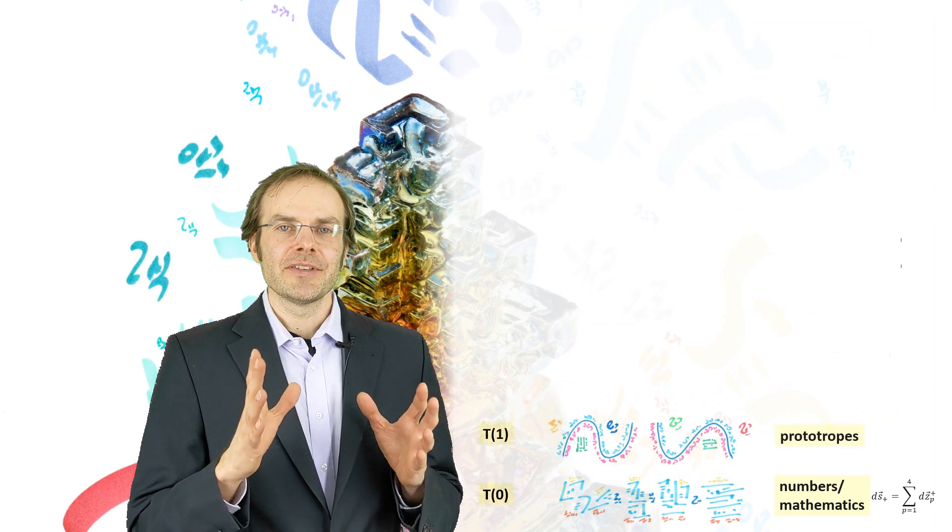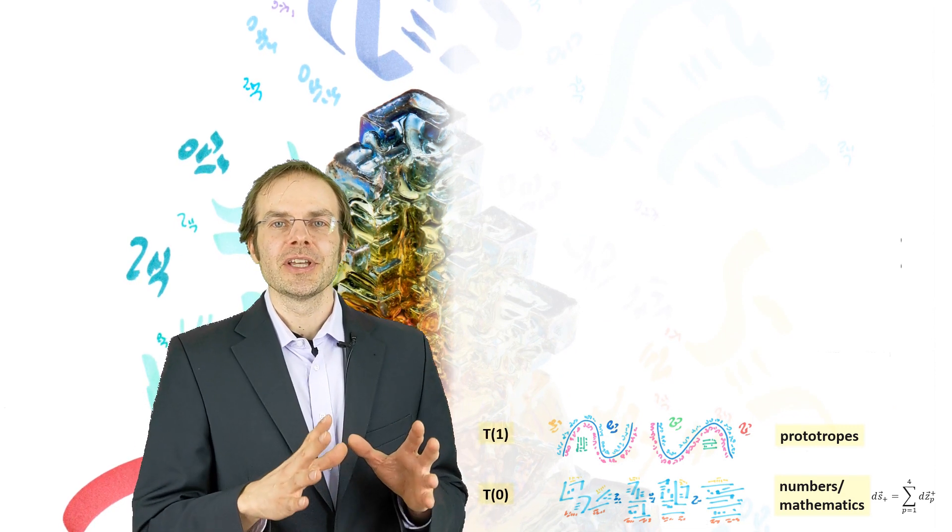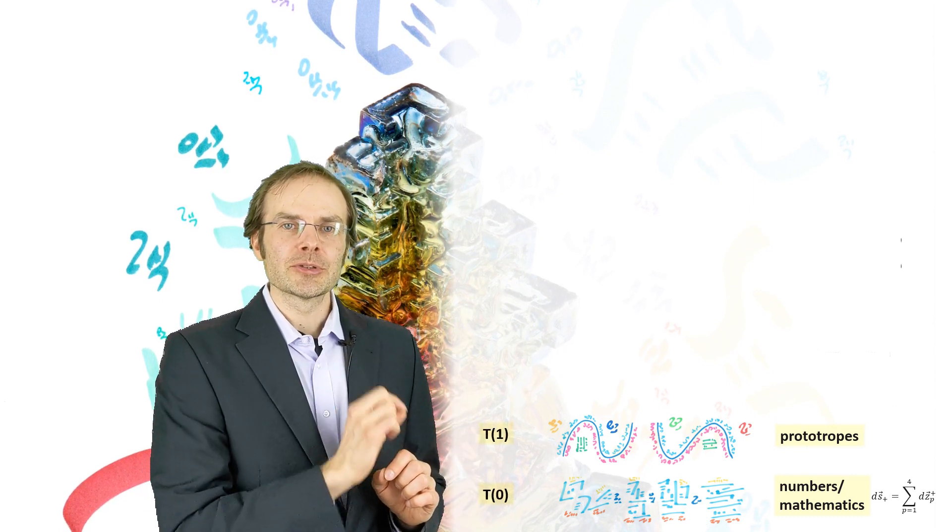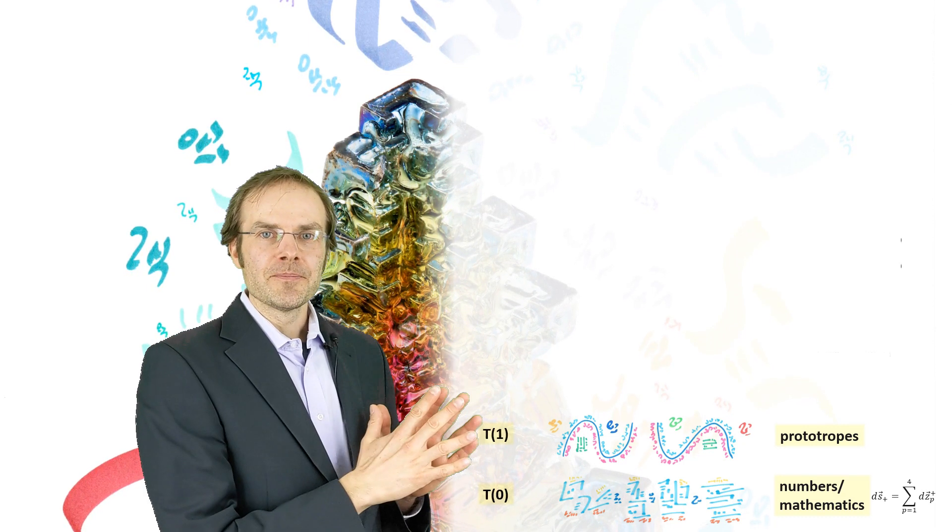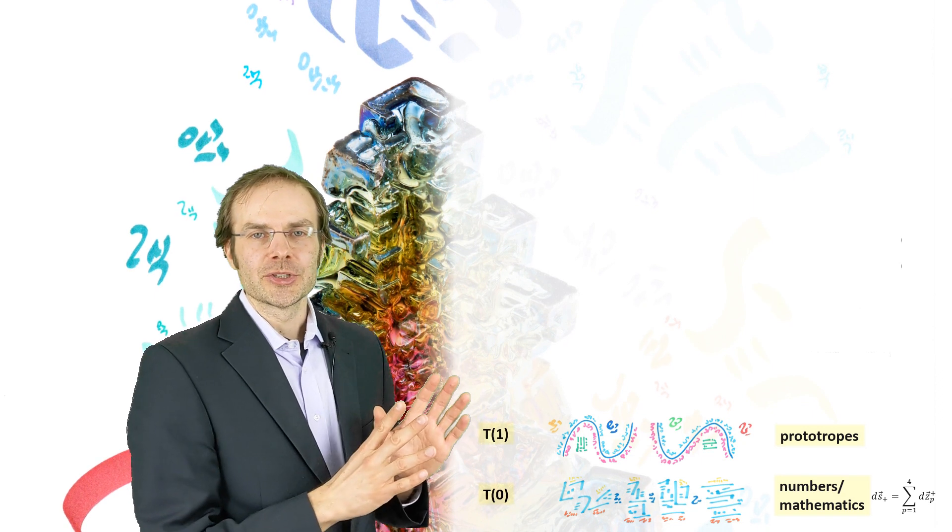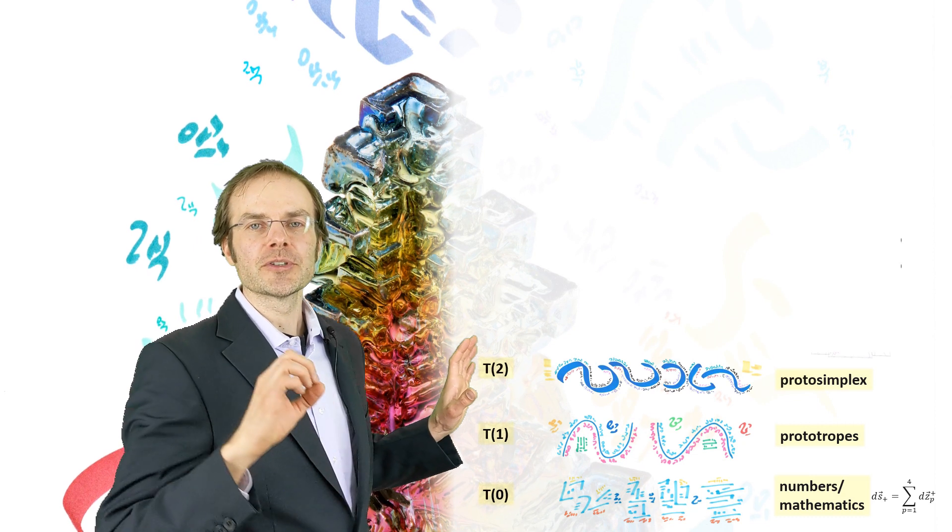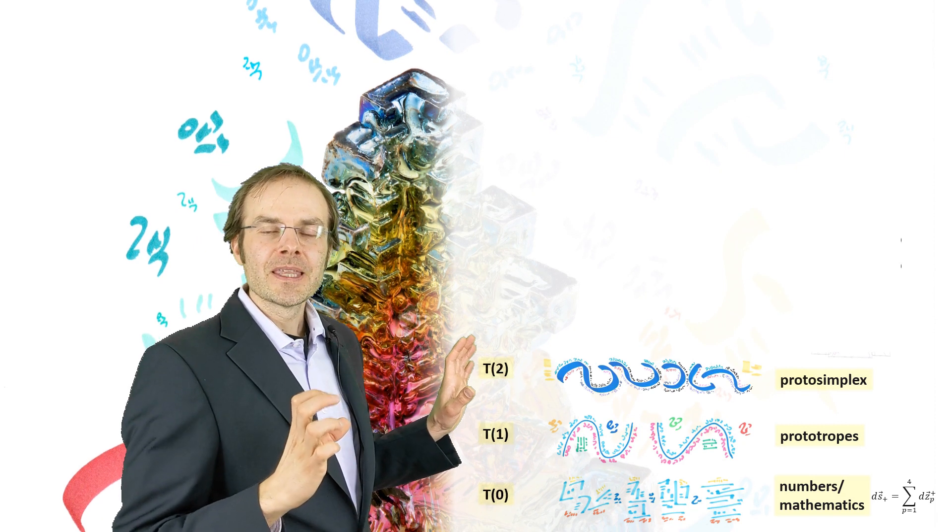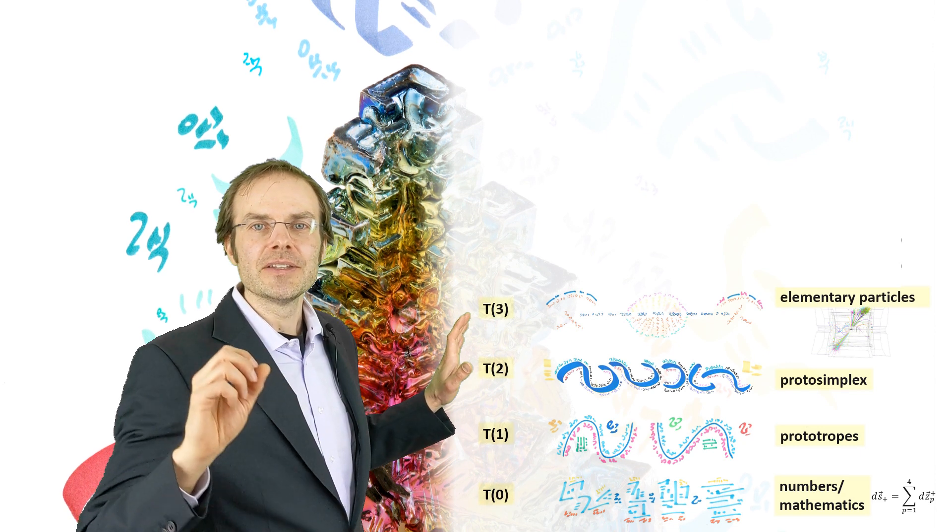Now, the direct identification of the elementary particles with these hermetry forms was actually a rather big shortening, because from the prototropes, they have to be arranged in a certain way to form more complex structures, and these form totality 2. Heim called these structures protosimplexes, and only if they converge in a certain way do they then form the elementary particles, which are totality 3.